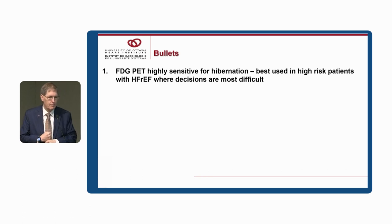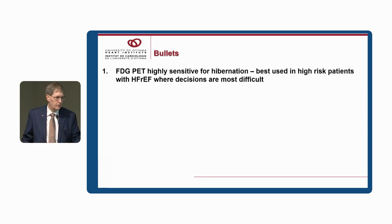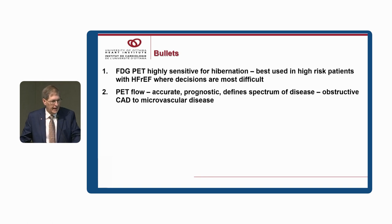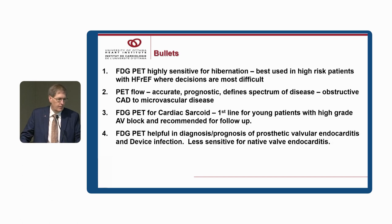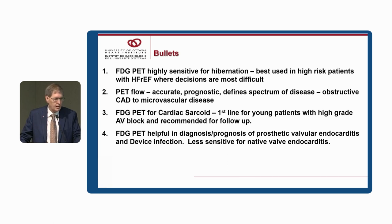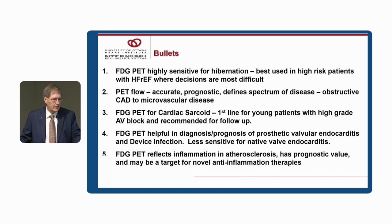FDG PET is also recommended when there is active disease in patients with manifest cardiac sarcoid or increased ventricular arrhythmia burden. FDG PET is highly sensitive for hibernating myocardium and is best used in high-risk patients with reduced ejection fraction. PET flow provides accurate prognostic information defining a spectrum from obstructive to microvascular dysfunction. For sarcoid, FDG PET is considered first-line in young patients with high-grade AV block. It provides helpful diagnosis and prognosis for prosthetic valve endocarditis and device infection, is less sensitive but still valuable in native valve endocarditis, and reflects inflammation and atherosclerosis with prognostic value.